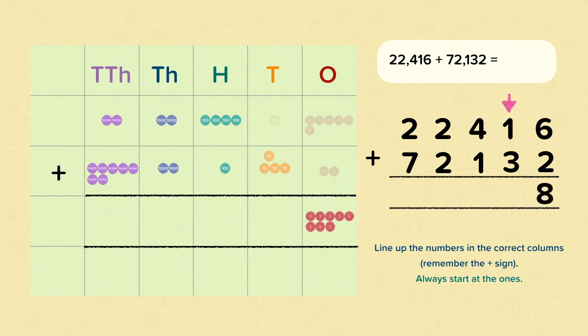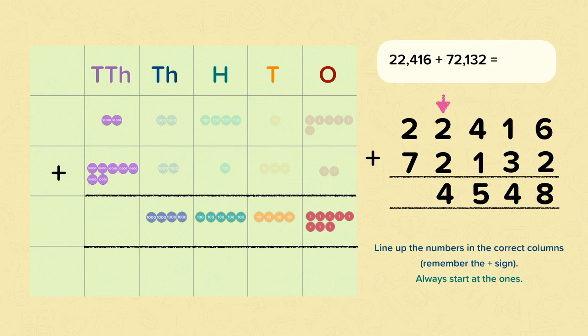Then we can move on to the tens. We've got one add three, and that's four. And then onto the hundreds, four add one, that's five. Onto the thousands, two add two is four. And then onto the ten thousands, two add seven is nine. So our answer is 94,548.